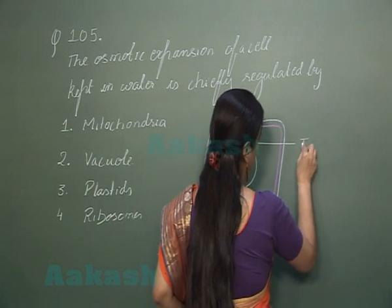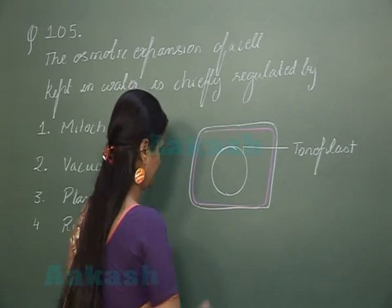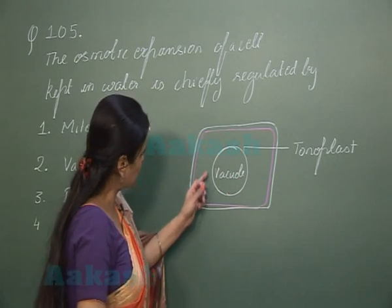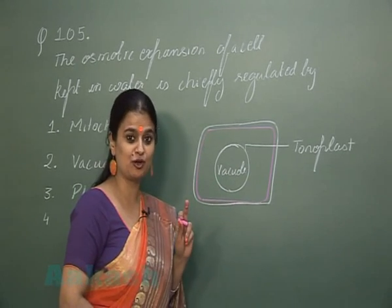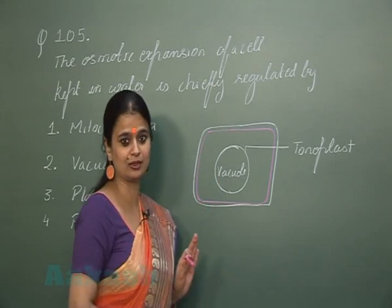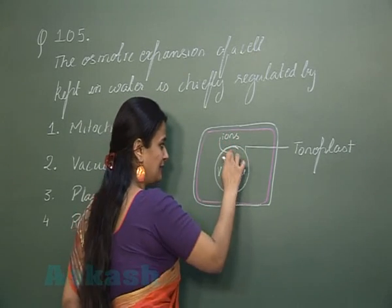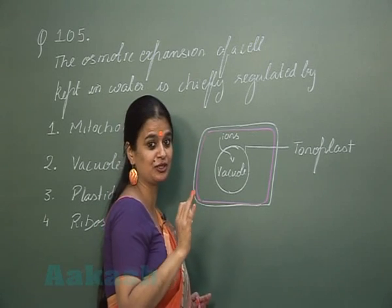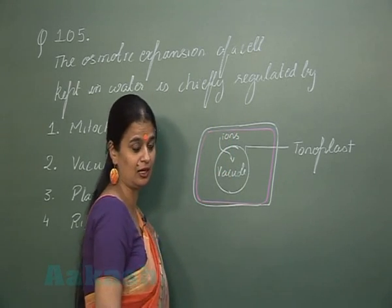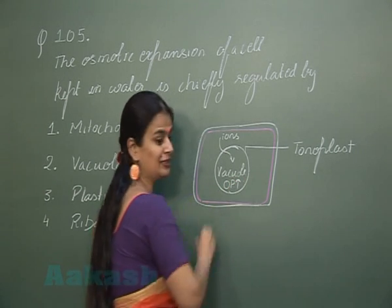And you know that in the vacuole, the membrane which is present is known as tonoplast. Now the tonoplast allows the passage of ions against the concentration gradient inside the vacuole, so the ions move inside the vacuole against the concentration gradient, that is from low concentration to high concentration area, due to which inside the vacuole, osmotic pressure increases.